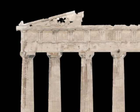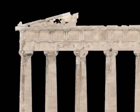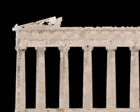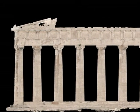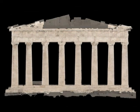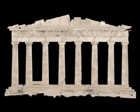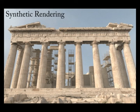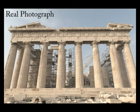We applied this process to both the east and west facades of our model, deriving lighting-independent surface reflectance maps for each. With the reflectance properties recovered, we can render the scene from new viewpoints and new illumination conditions. Here we see a real photograph compared with the synthetic rendering of the model, made using lighting captured at the same time as the photograph.